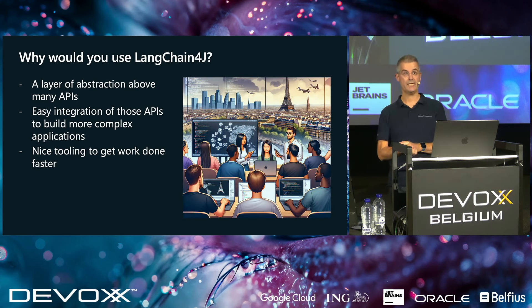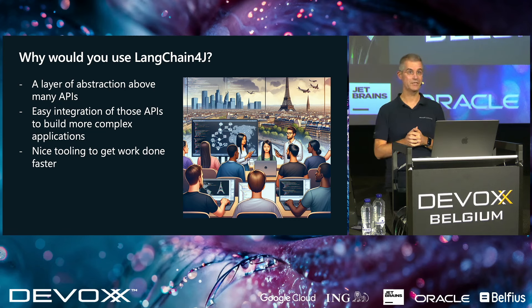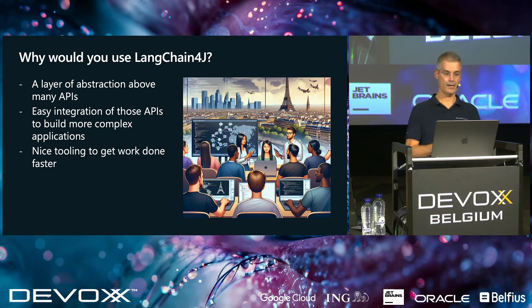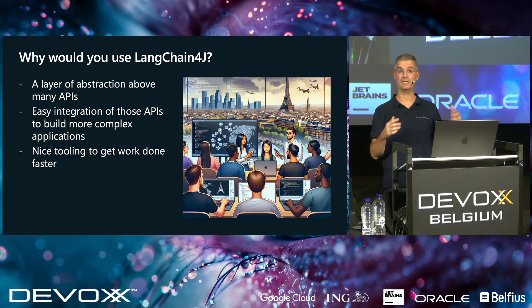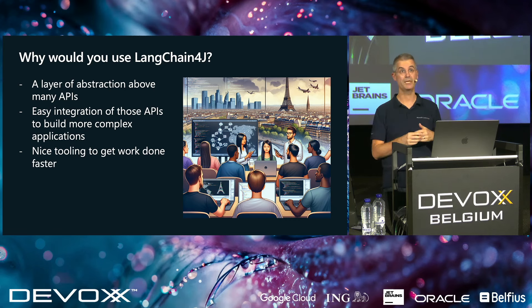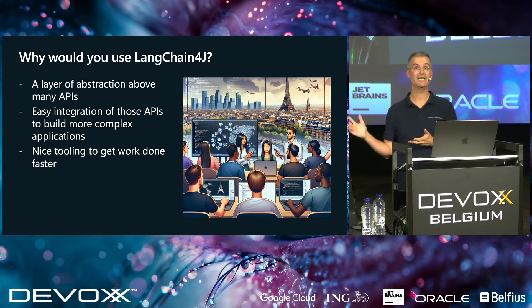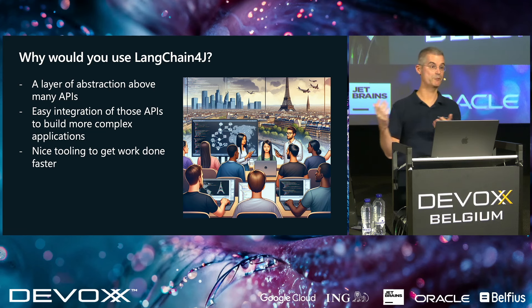Why would you use LangChain4J? Well, you can totally use AI without any framework — just like you can do REST endpoints without Spring Boot. But if you have a framework, usually it helps a little bit. LangChain4J gives you an abstraction layer over numerous tools, typically LLMs or vector databases. It also gives you integrations on top of this abstraction layer, which is what we need for the RAG pattern. It gives you a lot of tooling to get you productive much quicker — exactly like Spring Boot for REST APIs.